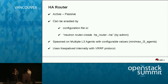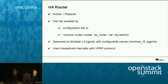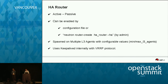An HA router is implemented in active-passive mode. It can be enabled using a configuration file in neutron.conf, or an administrator can create an HA router using a particular flag when creating a Neutron router. It is spawned on multiple L3 agents, and you can define configuration options like minimum and maximum L3 agents. HA is supported using keepalived, which uses the VRRP protocol.